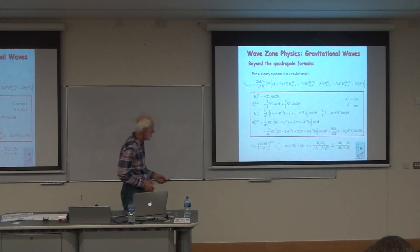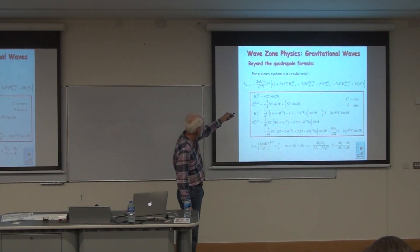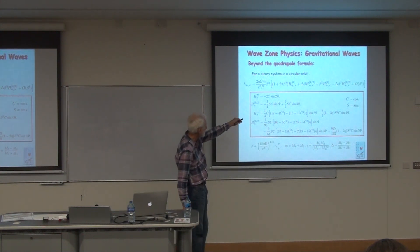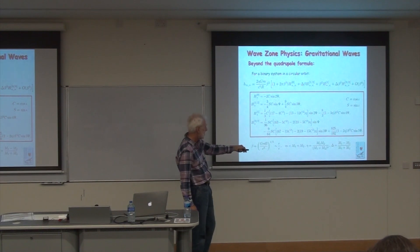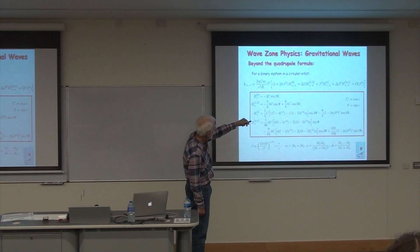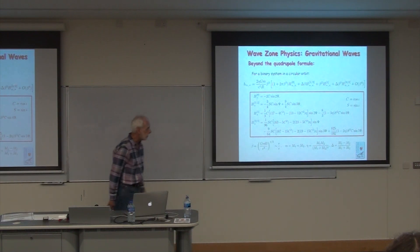Then the various contributions: there's a quadrupole contribution, there's a correction to that. There's a one-half post-Newtonian order correction that's order beta compared to the leading term. It tends to depend on the difference between the two masses. If the masses were equal, this term wouldn't exist. Delta is the dimensionless difference between the two masses. There's a one-pn correction of order beta squared, a beta cubed term that also depends on delta at three-halves post-Newtonian order, and so on.